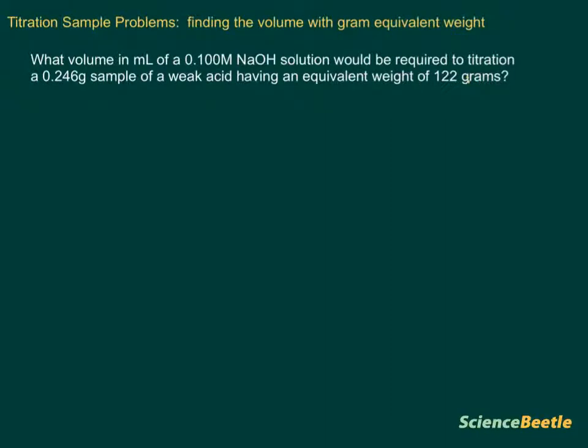The previous page is asking us to look at the milligrams, or the milliliters, and so we're going to have to find the volume of an acid using a gram equivalent weight for that acid. The sample problem here is: What volume in milliliters of a 0.100 molar sodium hydroxide solution would be required to titrate a 0.246 gram sample of a weak acid having an equivalent weight of 122 grams?